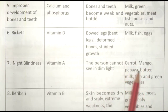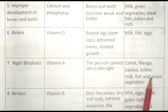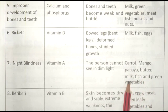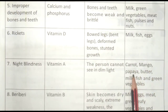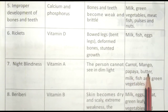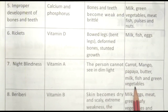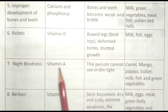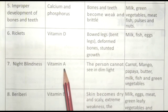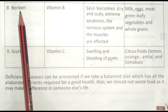Food sources to fulfill Vitamin A deficiency: Carrot, Mango, Papaya, Butter, Milk, Fish and Green Vegetables — Gajar, Aam, Papita, Makhan, Doodh, Machli aur Hari Sabziyan. In bhojan ko khane se Vitamin A ki kami poori ho jati hai.